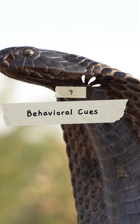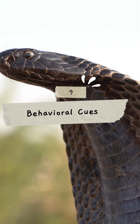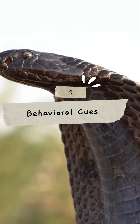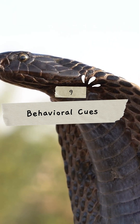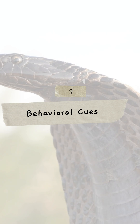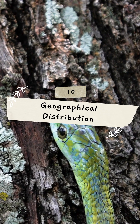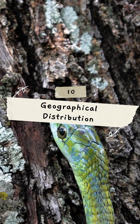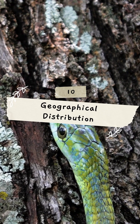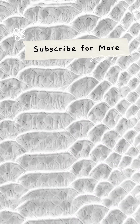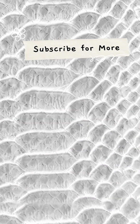9. Behavioral Cues: they may act aggressively or defensively to warn others. 10. Geographical Distribution: different types live in different places. Subscribe for more.